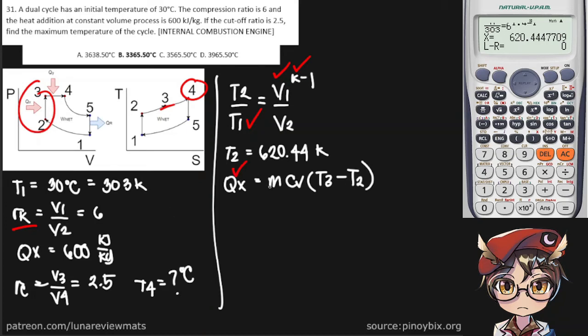So we're given this, we're given this, and we can assume M to be 1. And Cv is equal to 0.7186 kilojoules per kilogram. Trying to find T3. T2, we already computed for right here.